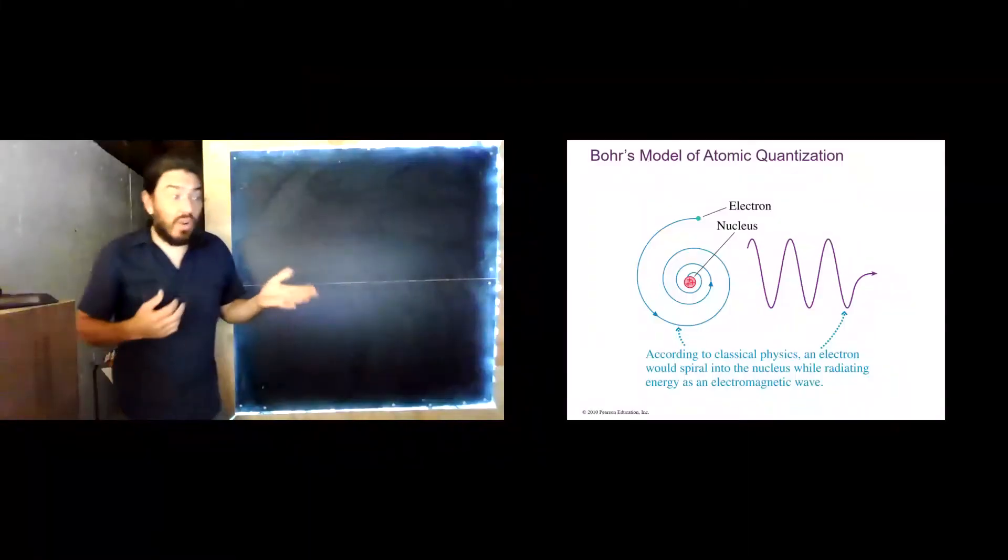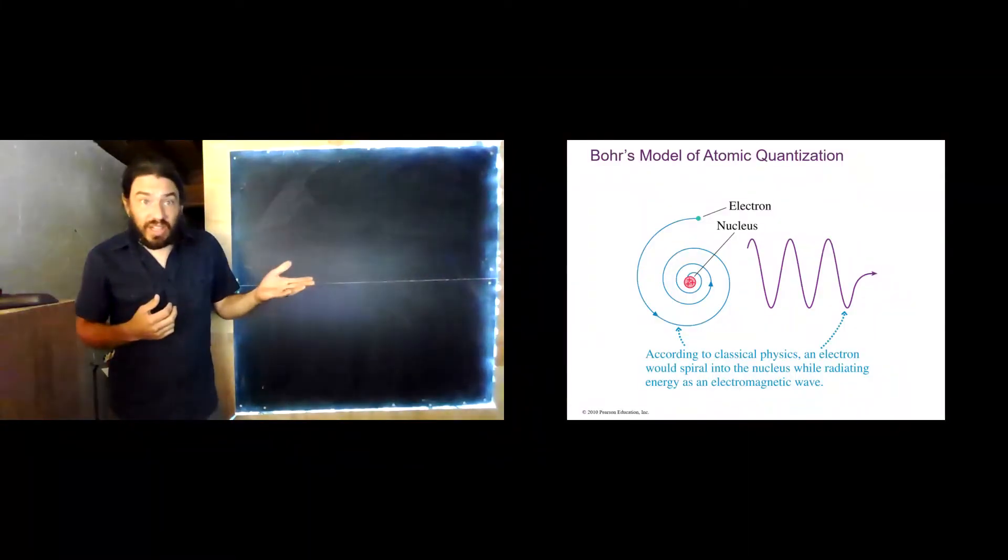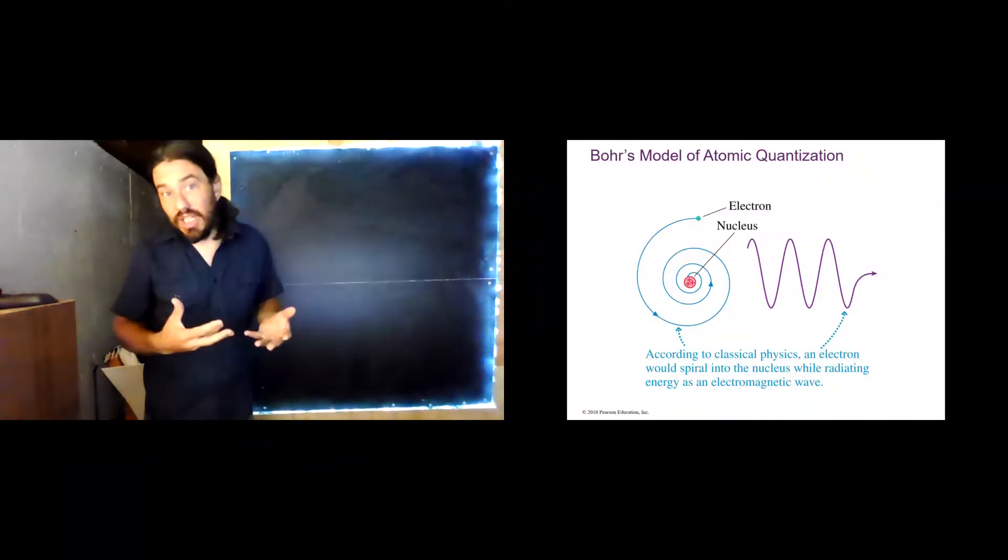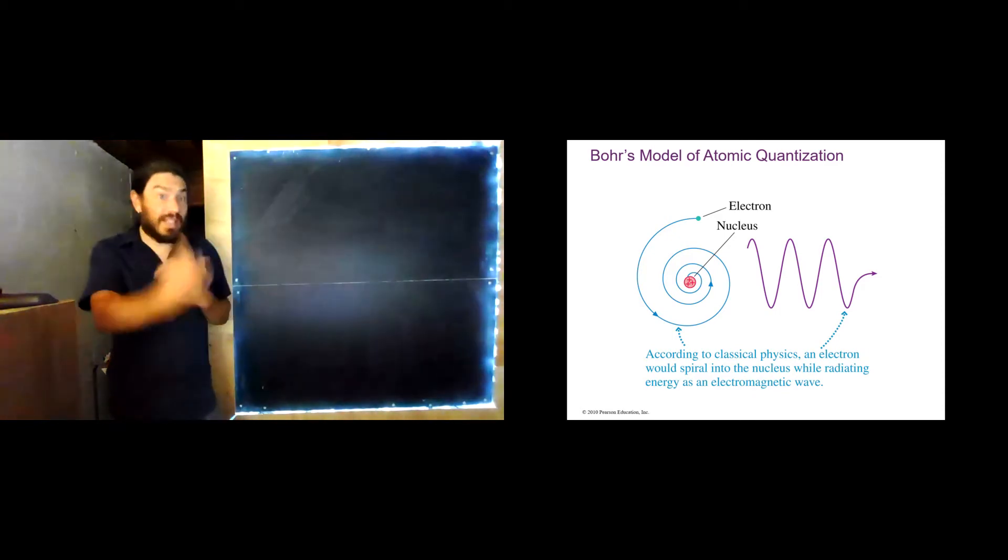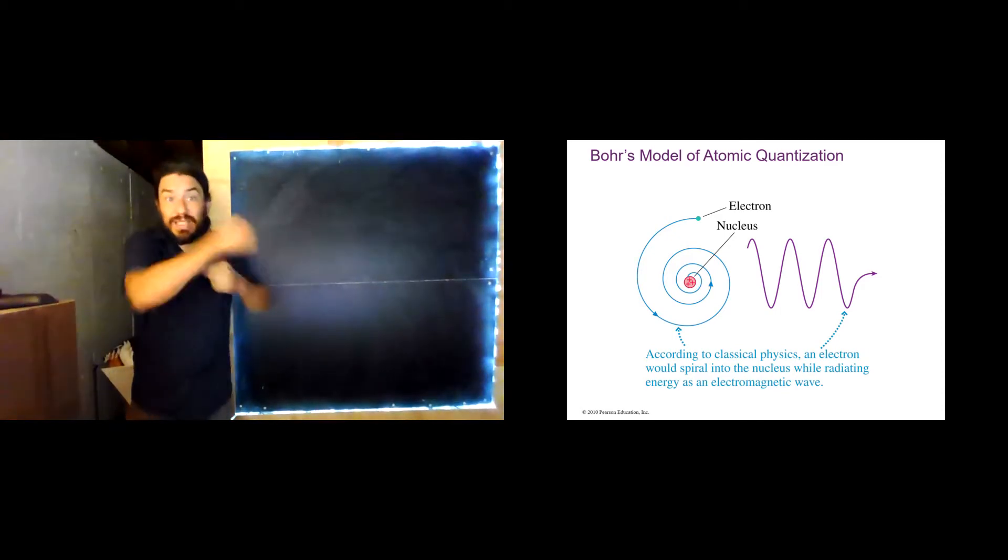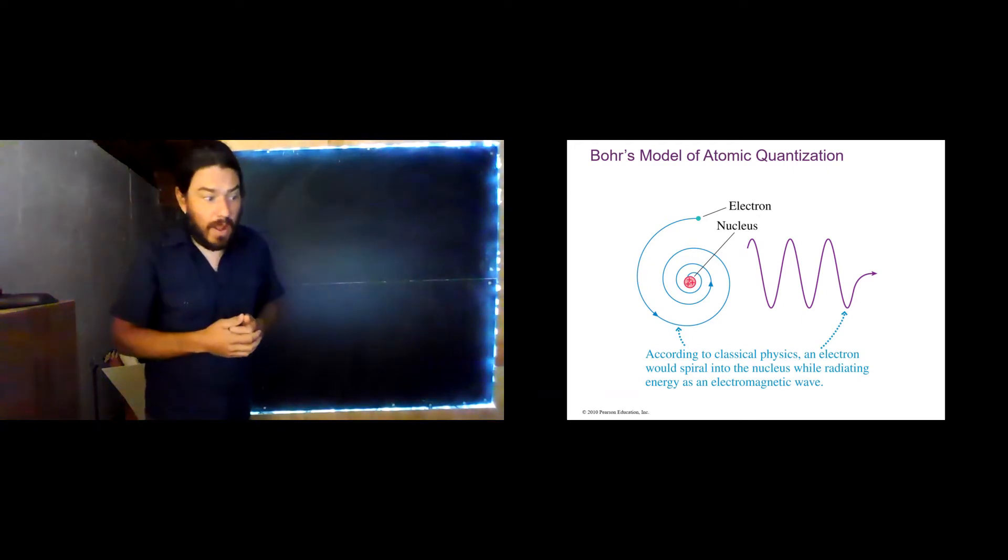And so it is accelerating. And according to electromagnetic theory, it should radiate energy, and it should lose its kinetic energy then, and we expect it to spiral into the nucleus, which makes sense.